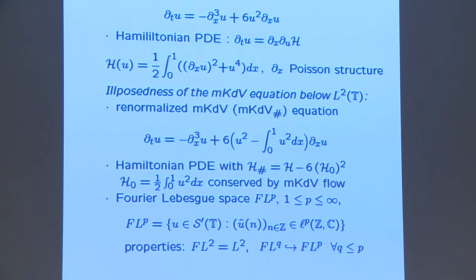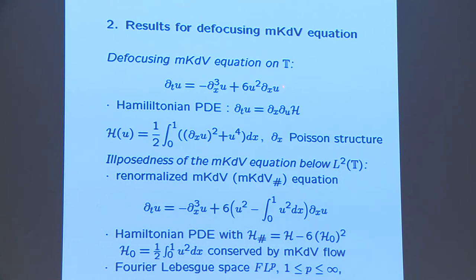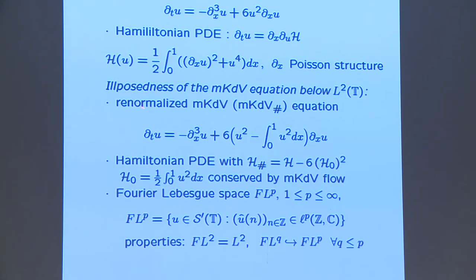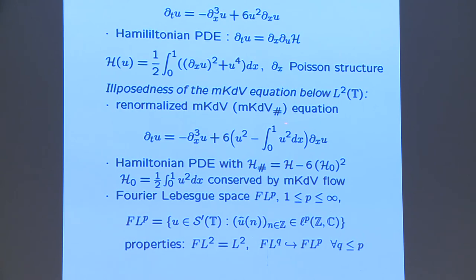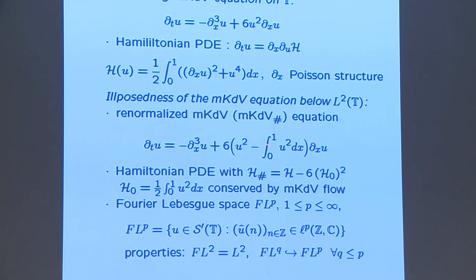Now, corresponding results for the defocusing MkdV equation. The defocusing MkdV equation on the circle differs from the KdV equation in that instead of u we have u squared. It's a Hamiltonian PDE where d/dx is again the Poisson structure from Gardner. The MkdV Hamiltonian is given by (∂x u)² plus u to the 4. In KdV you have u to the 3; here you have u to the 4.